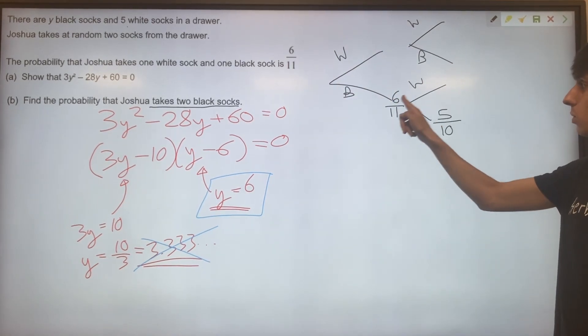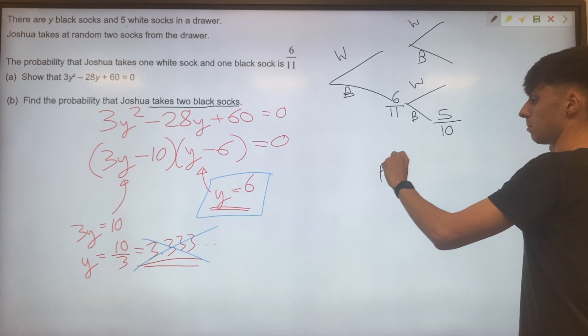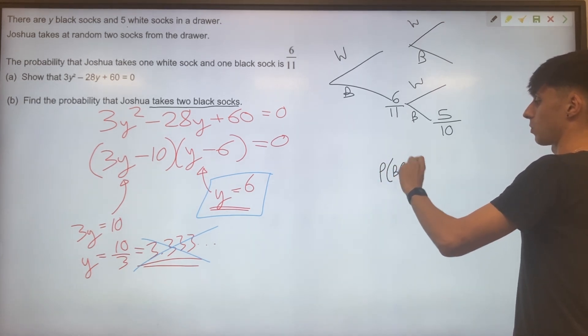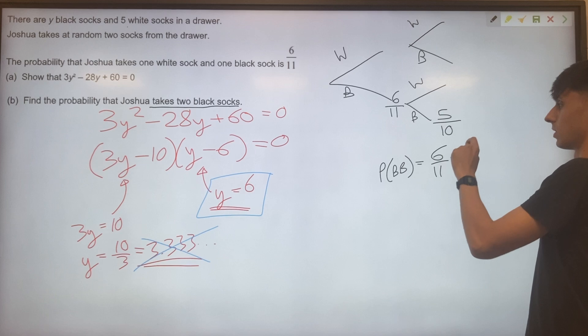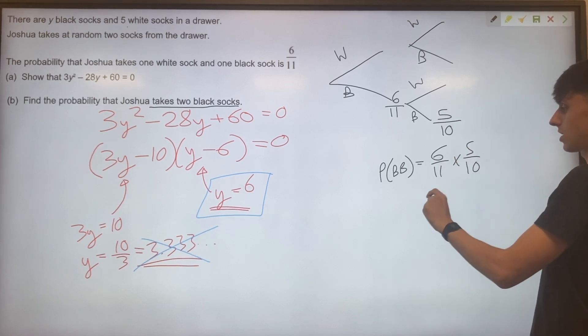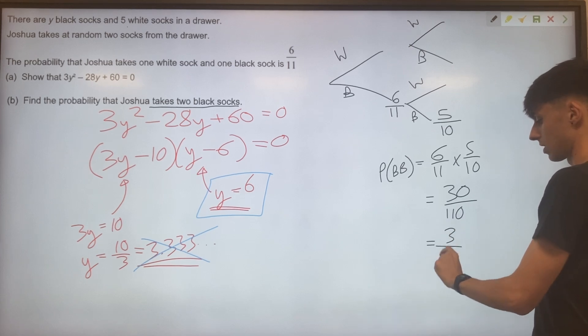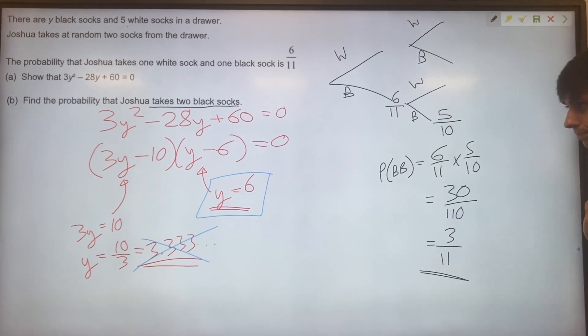So probability of two black socks, probability of black, black. We will multiply these together. So 6 out of 11 times 5 out of 10. We've got 30 out of 110 or 3 out of 11.